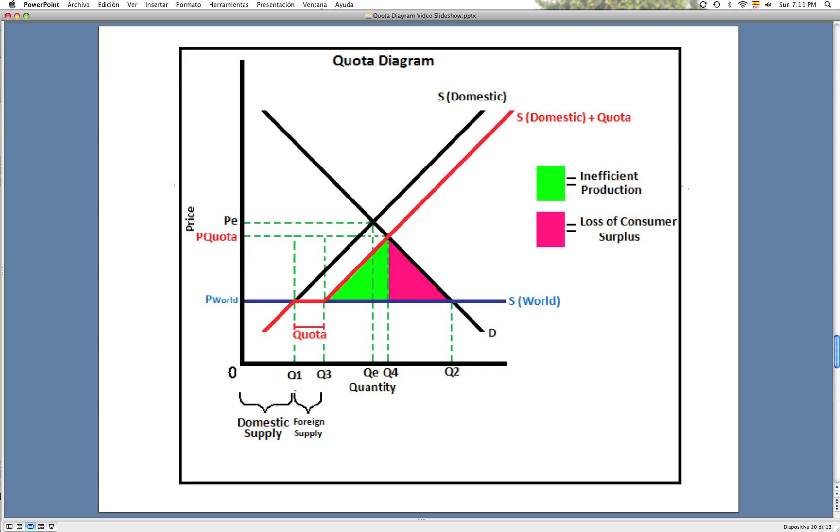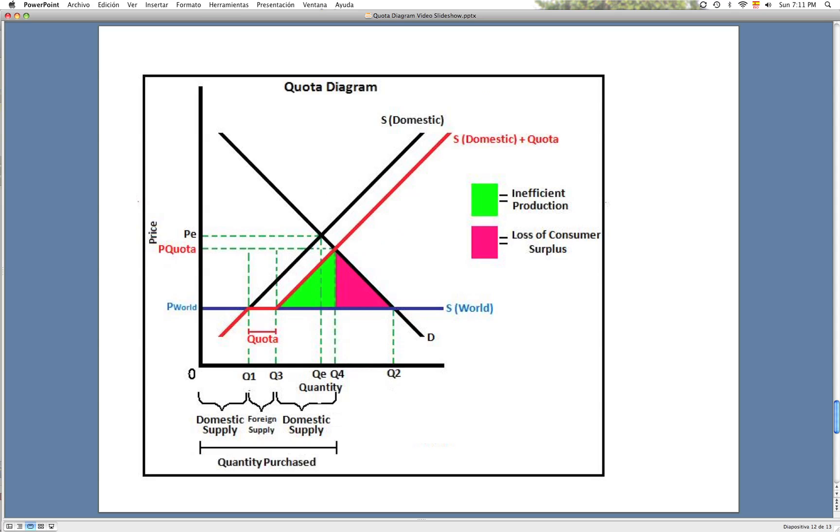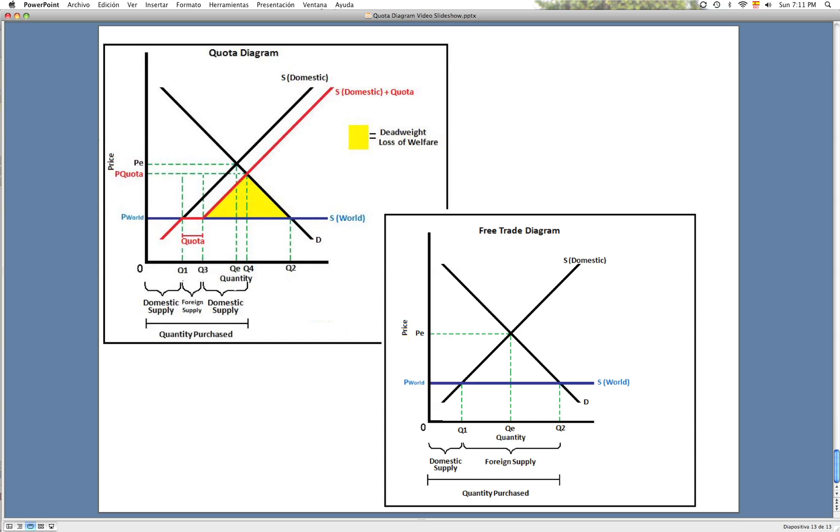The domestic supply after quota is from zero to Q1, while the foreign supply is from Q1 to Q3. Also, the domestic producers supply from Q3 to Q4.